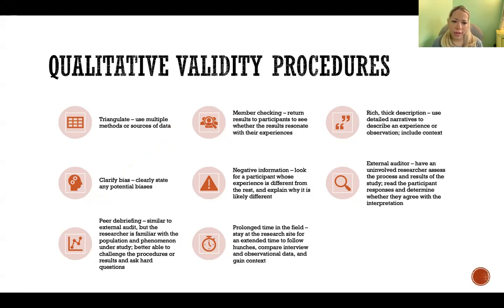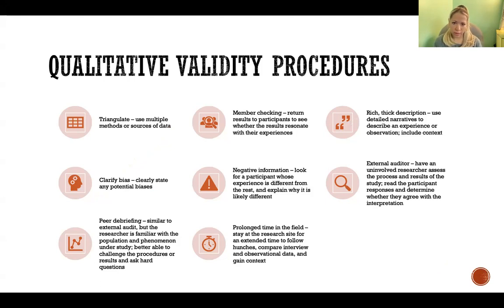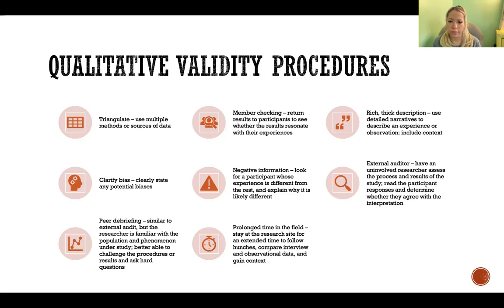First, triangulation — that's the use of multiple methods or sources of data. The idea is that the more sources of data that we have, the more confident we can be in the validity of the data, especially assuming that those sources agree on the different themes and findings in your research.